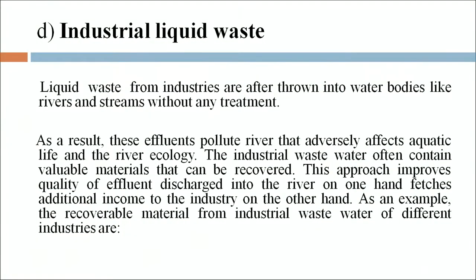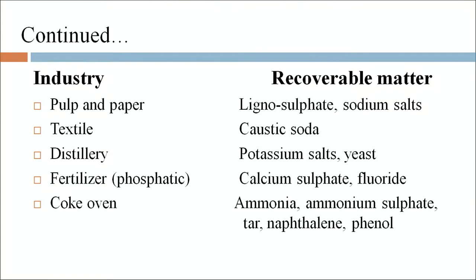Liquid waste from industries is often thrown into water bodies like rivers and streams without any treatment. These effluents pollute rivers and adversely affect aquatic life and river ecology. However, industrial wastewater often contains valuable recoverable materials. For example: from paper and pulp industry — lignosulphate and sodium salts; textile industry — caustic soda; distillery industry — potassium salt and yeast; fertilizer industry — calcium sulphate and fluoride; coke-oven — ammonia, ammonium sulphate, tar, naphthalene and phenol. This approach improves the quality of effluent discharge and fetches additional income to the industry.